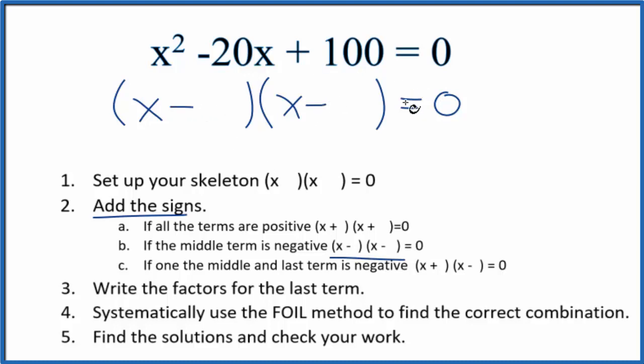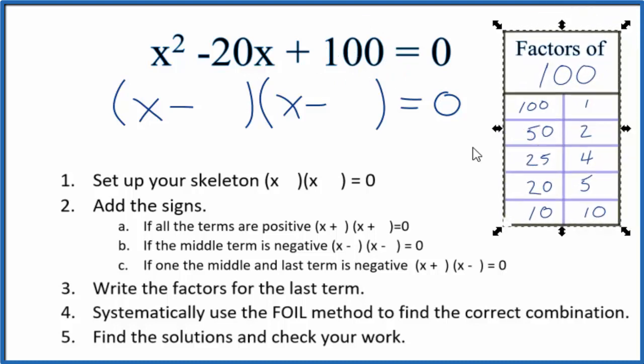Now we need to find the factors for 100. I've already done that and it looks like this. We have these different factors for 100 and we want to know which ones will add up to give us this middle term.